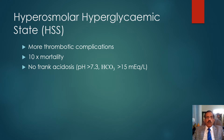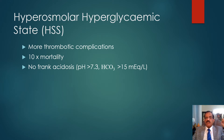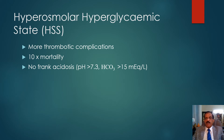There is usually no frank acidosis. By definition the pH should be more than 7.3 and bicarbonate should be more than 15 mEq/L. Values above these thresholds may still be mildly acidotic, but this level of acidosis is acceptable as part of HHS. More frank acidosis would qualify for the label of DKA. Patients with DKA may have a component of hyperosmolality and patients with HHS may have a little acidosis — we must see which component is predominant.